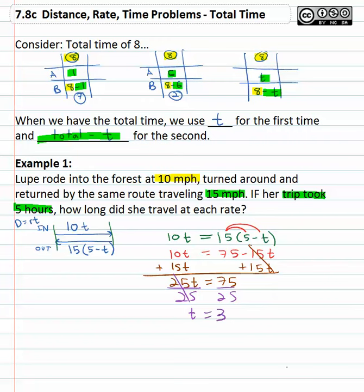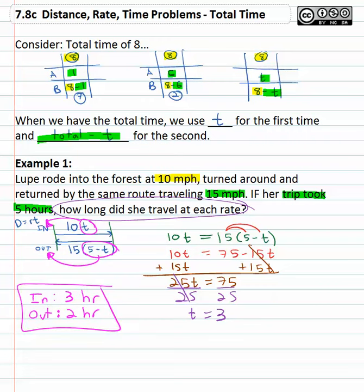We want to be careful that we answer the right question. How long did she travel at each rate? Three is the time going into the forest. As she went in, she traveled for 3 hours. Coming out then, the time on the way out was 5 minus t, or 5 minus 3 is 2 hours. It took Lupe 3 hours to get in and 2 hours to come out.